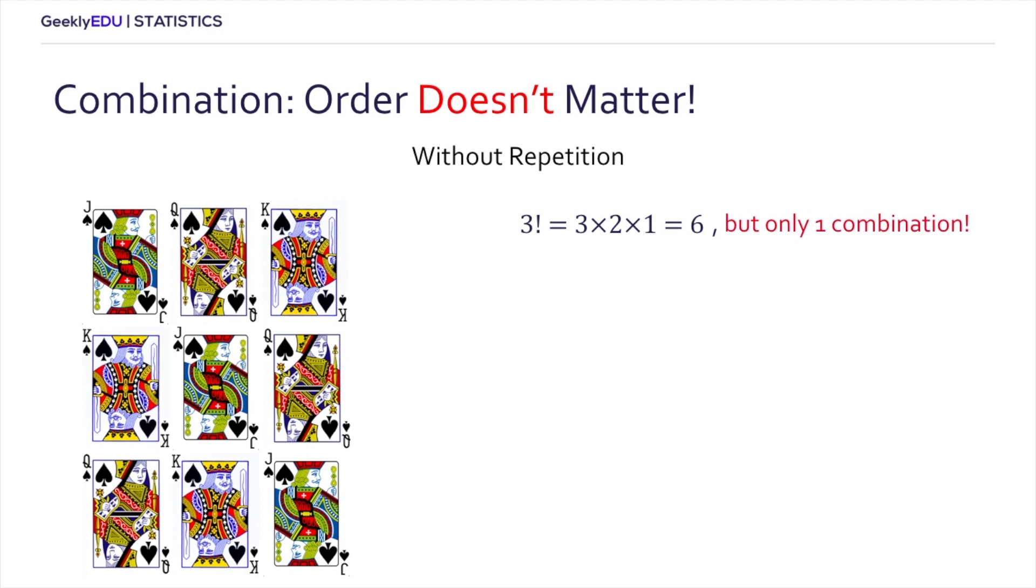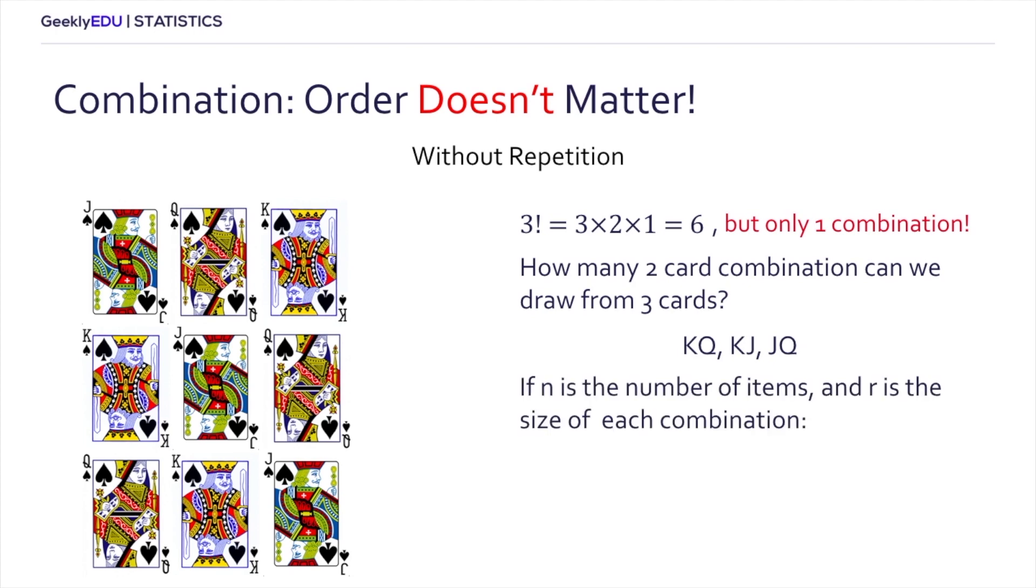So let's ask a slightly different question: how many two card combinations can we draw from three cards? If we consider the possibilities, we realize that there are only three. It's the king and queen, the king and the jack, and jack and the queen. So mathematically, what that is going to look like, if n is the number of items and r is the size of each combination, is this.